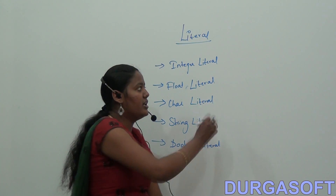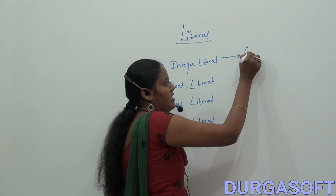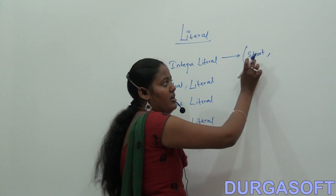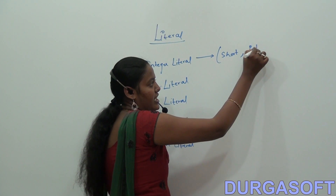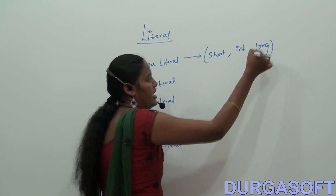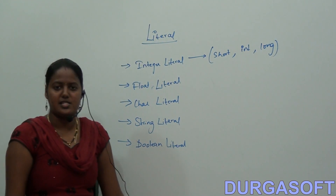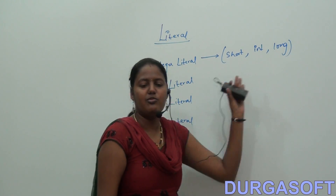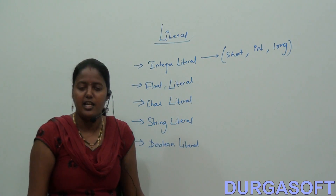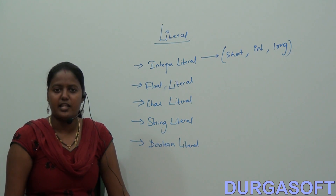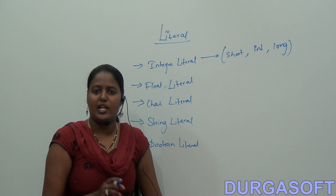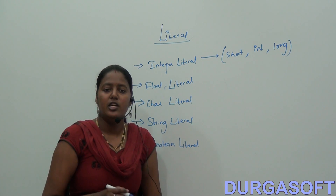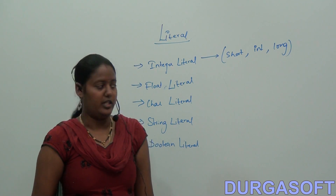For integer literals, the data types include short, int, and long. A constant value assigned to either short, int, or long data type is called an integer literal. You cannot put a decimal point value in these constant values.